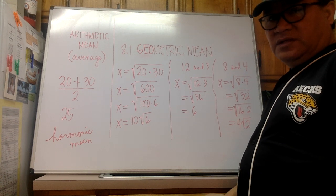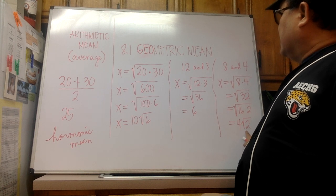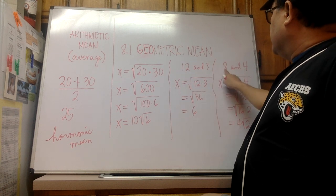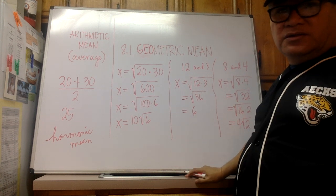And to summarize, 4 square root of 2 is the geometric mean between 8 and 4. Any questions so far?